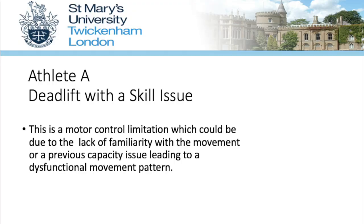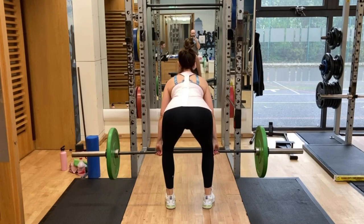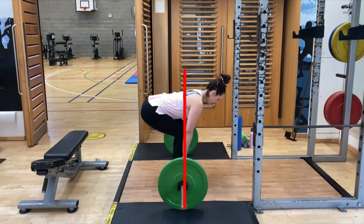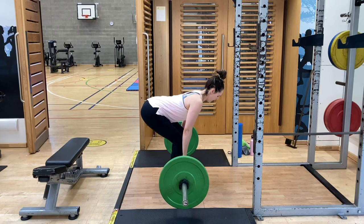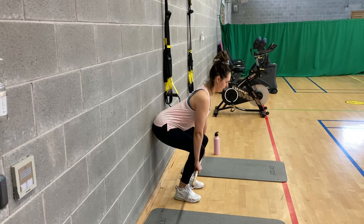Moving on to the deadlift with a skill issue. Viewing the deadlift from the rear view, there is a greater external rotation of the right ankle in comparison to the left. Although we have prior knowledge of a limitation in ankle mobility from analysing the athlete's squatting pattern, it is hard to notice any issues from the rear view. Viewing the athlete from the side view, notice that the athlete starts with their hips too high. In doing so, as she initiates the movement the bar has to swing forward, causing excess loading on the lumbar spine. Although we are aware of the athlete's previous capacity limitations, the approach to re-pattern the deadlift through cues and feedback was taken to see if the sub-optimal movement strategy was due to a skill issue.